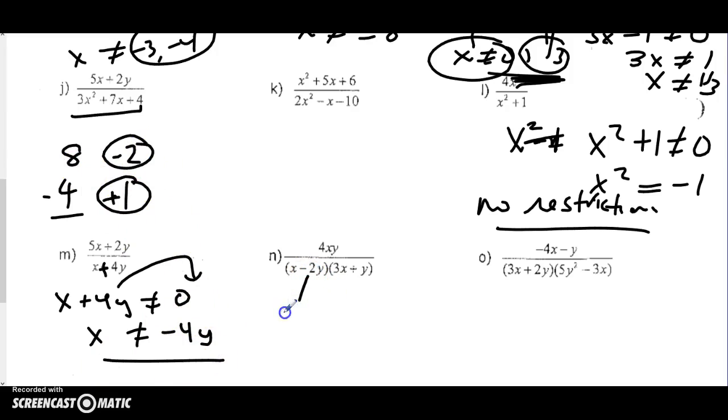Same with this—if I want to say X minus 2Y cannot be 0, that's the same as saying that X cannot be 2Y. Over here I would have 3X plus Y cannot be 0, 3X cannot be negative Y, X cannot be negative Y over 3, or negative 1/3Y.